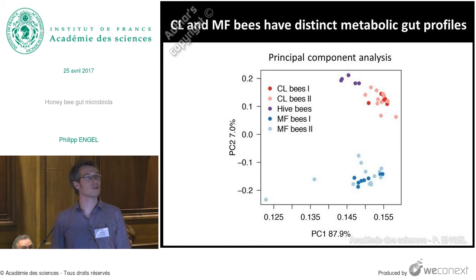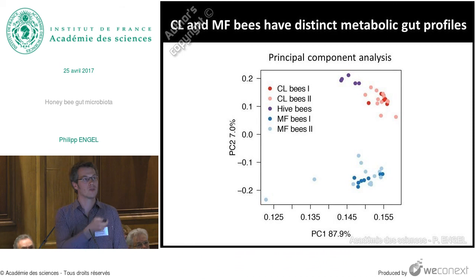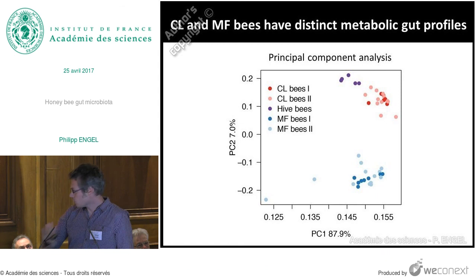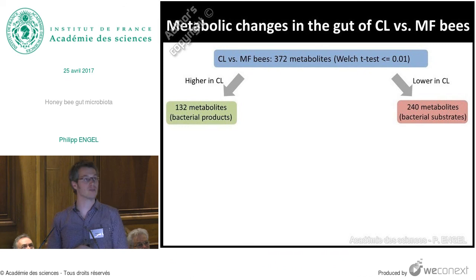Let's start with comparing the microbiota-free bees to the colonized bees. This is a principal component analysis of the metabolic profiles from these different bees. One thing we see very strikingly is that colonized bees cluster independently from the microbiota-free bees, meaning they have a very distinct and characteristic metabolic profile in the gut. When we included hive bees of the same age which were naturally colonized with the native microbiota, our colonized lab bees clustered more closely to the hive bees than the microbiota-free bees — really nice to see.